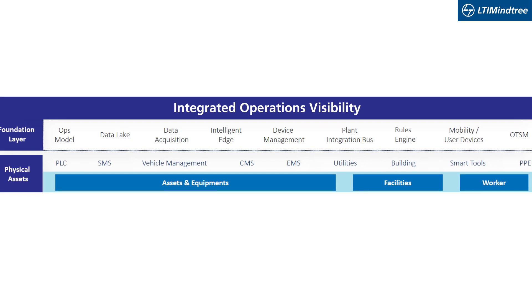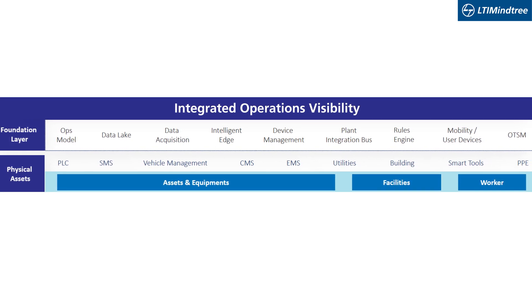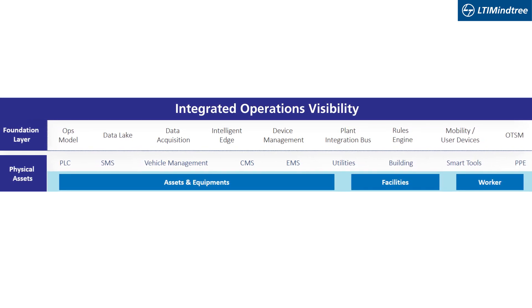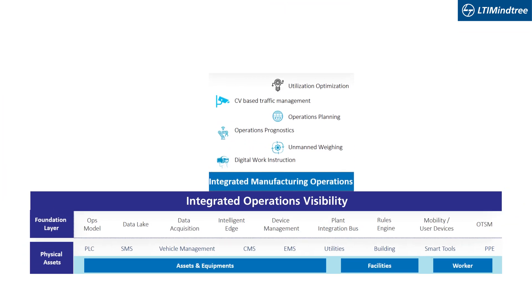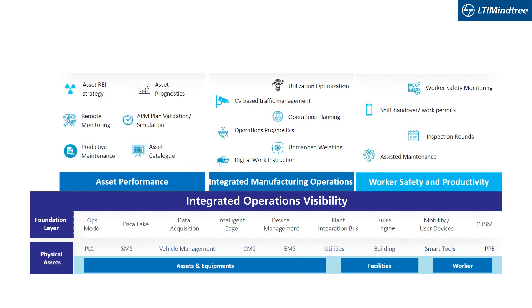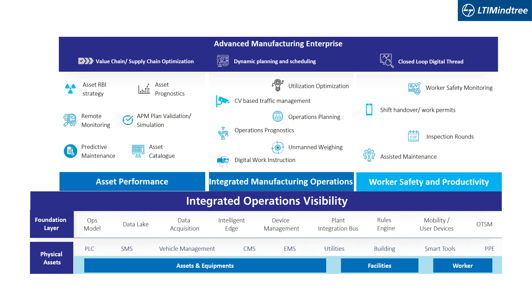Each layer of Industry X.0 Canvas adds the next level of digital maturity to your Industry X.0 vision. Integrated visibility provides near real-time visibility into plant assets and operations. The integrated shop floor provides a unified view of shop floor equipment, WIP, material, and workers. The advanced manufacturing enterprise optimizes manufacturing operations across the value chain by integrating information across factory and enterprise boundaries.